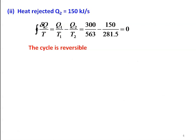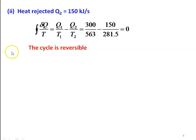We take the second case: heat rejected Q2 = 150 kJ/s. The cyclic integral of δQ/T = Q1/T1 − Q2/T2 = 300/563 − 150/281.5 = 0. So the cycle is reversible. When the cyclic integral of δQ/T = 0, the cycle is reversible.